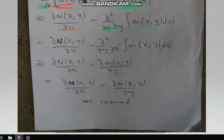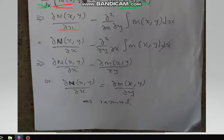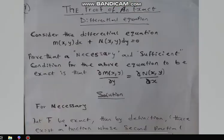The integral sign and dx cancel, and N becomes ∂N/∂x minus M becoming ∂M/∂y. Setting this equal to zero means ∂N/∂x − ∂M/∂y = 0, which means ∂N/∂x = ∂M/∂y. This is exactly what we were asked to show — the partial derivative of M with respect to y equals the partial derivative of N with respect to x, as required.